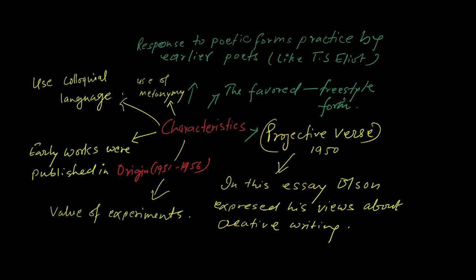Now let's talk about characteristics of Black Mountain poetry. This school was a response to poetic forms practiced by earlier poets like T.S. Eliot. They used particular projective words in their poetry, colloquial language, and metonymy a lot.